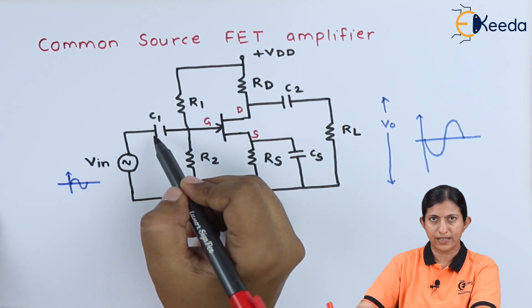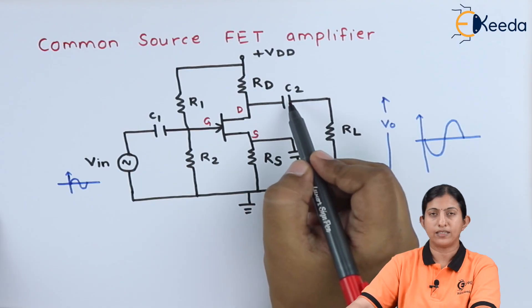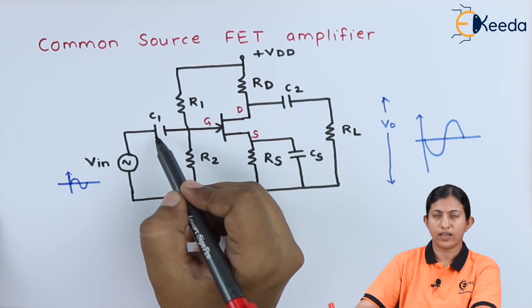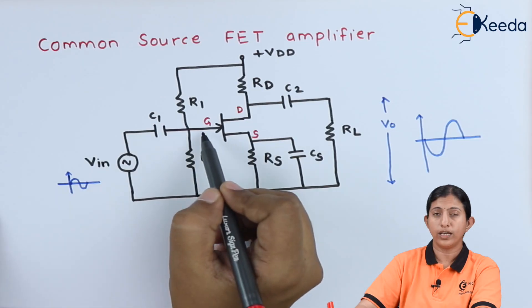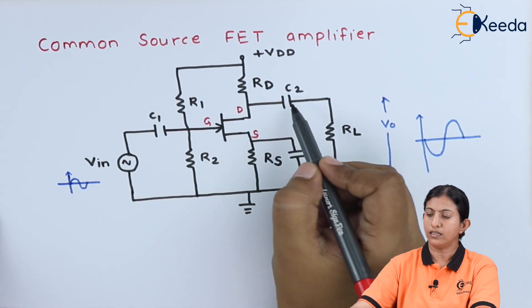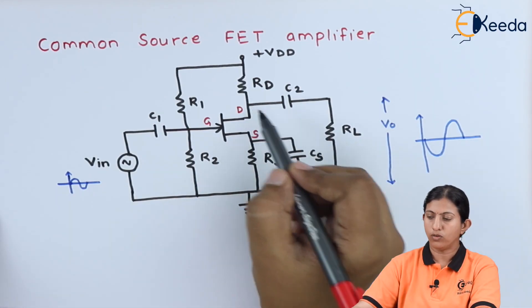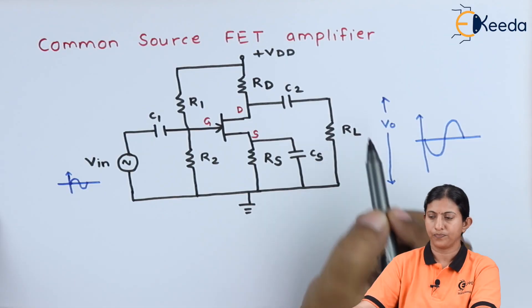We are using capacitor C1 and capacitor C2. Capacitor C1 couples the input to the gate terminal, and capacitor C2 couples the output to the load resistor.